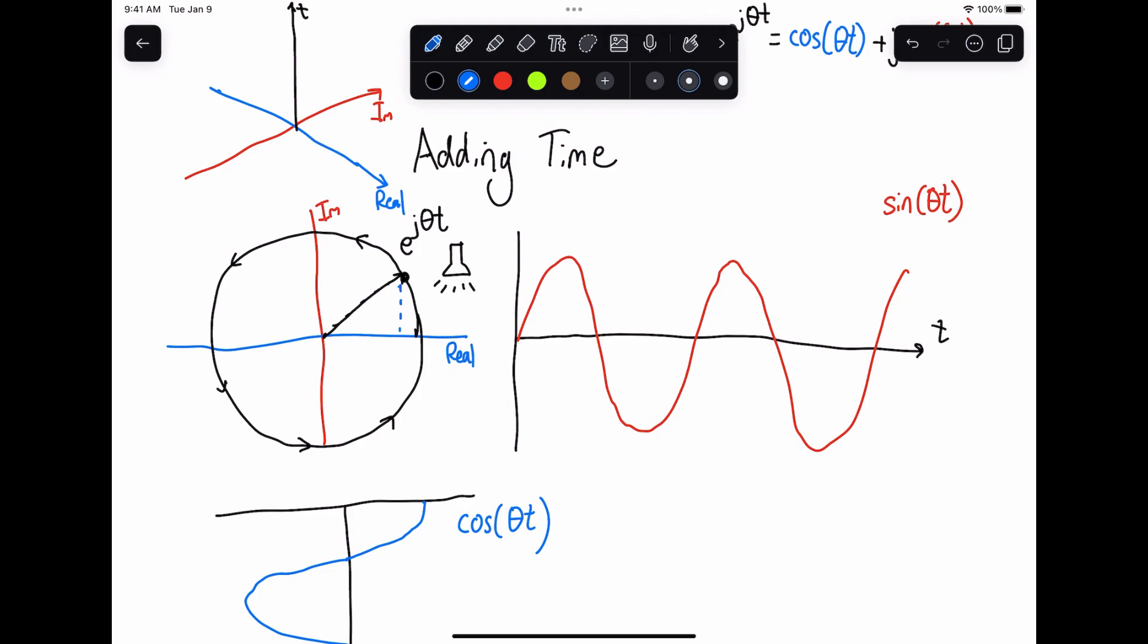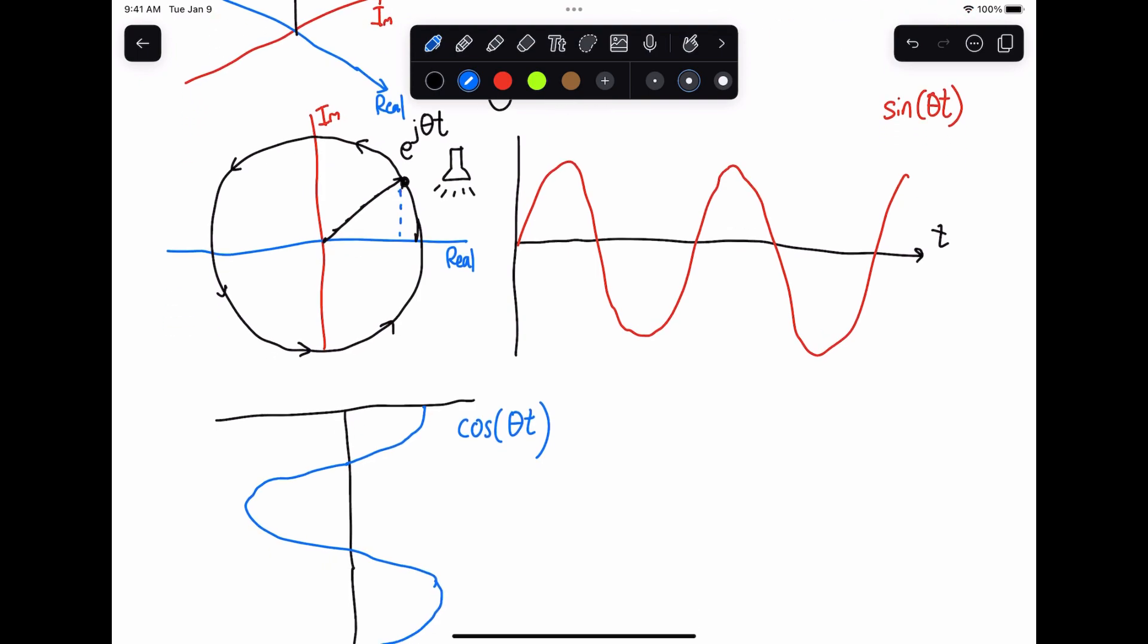when you look at it from the top or look at its shadow along the bottom when you shine the light up here, you're looking at only where it is along the real axis. You're basically—this is called a projection—you're projecting out the imaginary axis. And at any given point here at e to the j theta t, its projection along the real axis is just cosine of theta t.